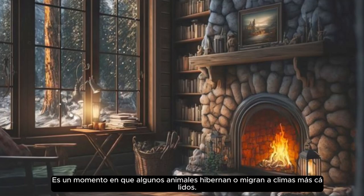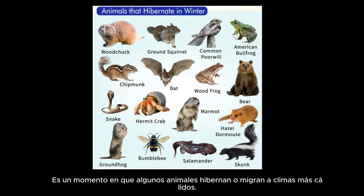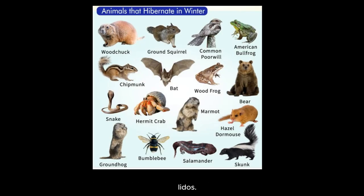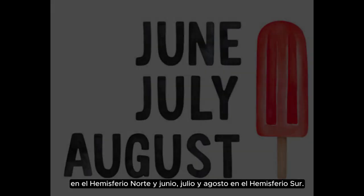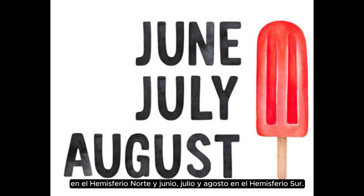It's a time when some animals hibernate or migrate to warmer climates. Winter occurs during December, January, and February in the Northern Hemisphere, and June, July, and August in the Southern Hemisphere.